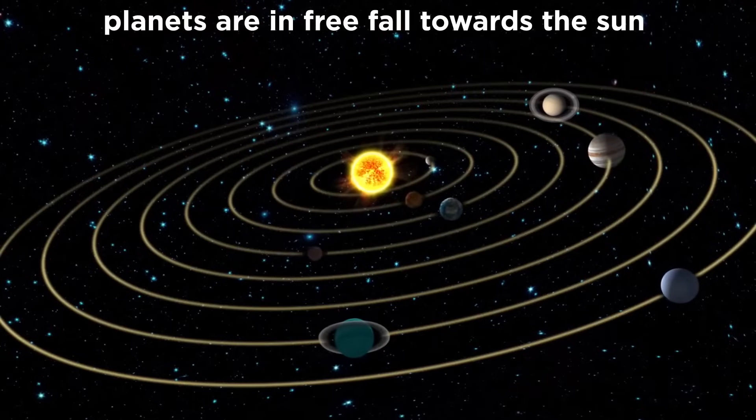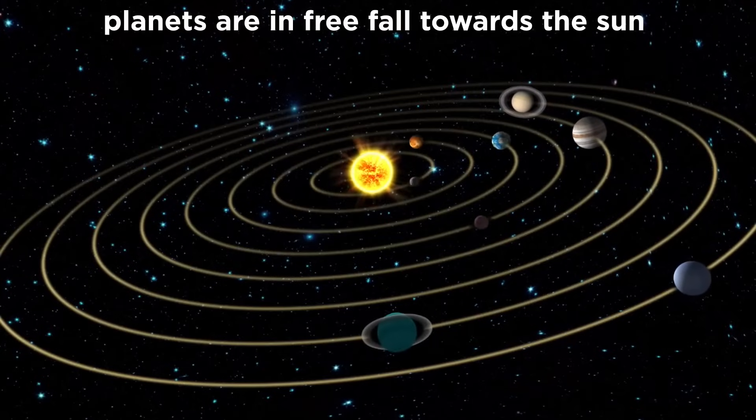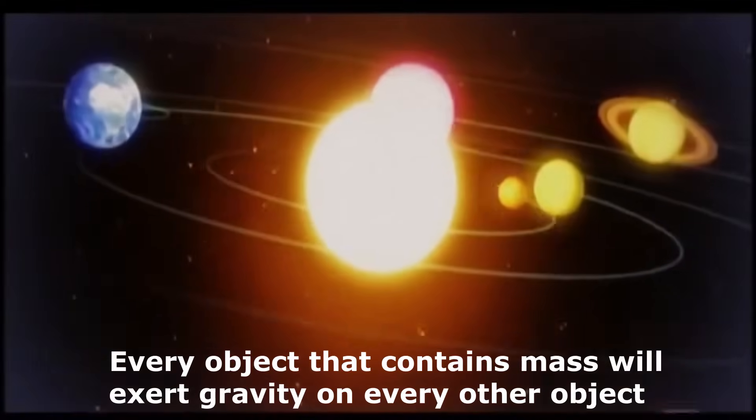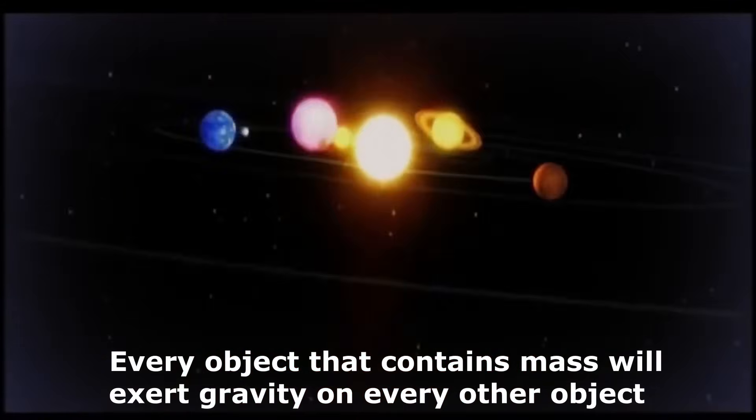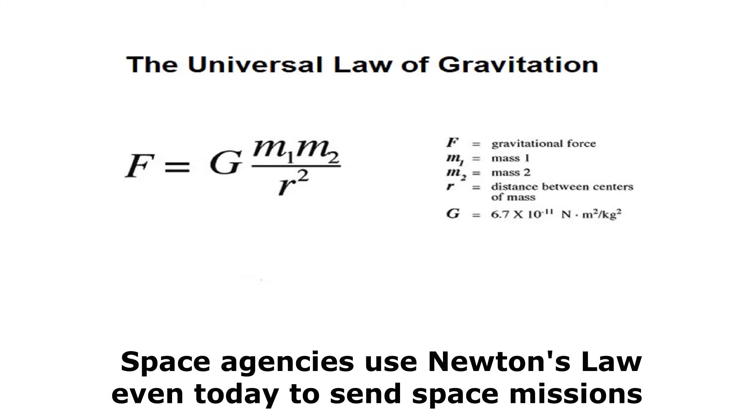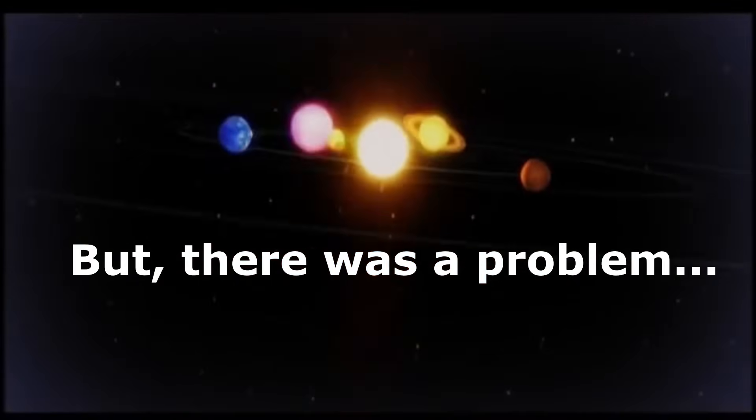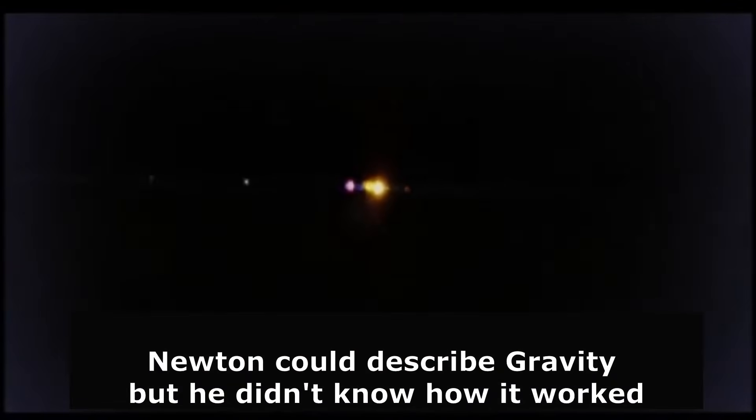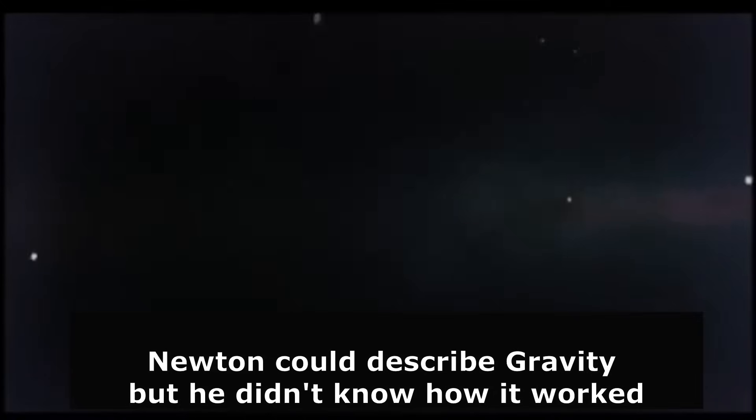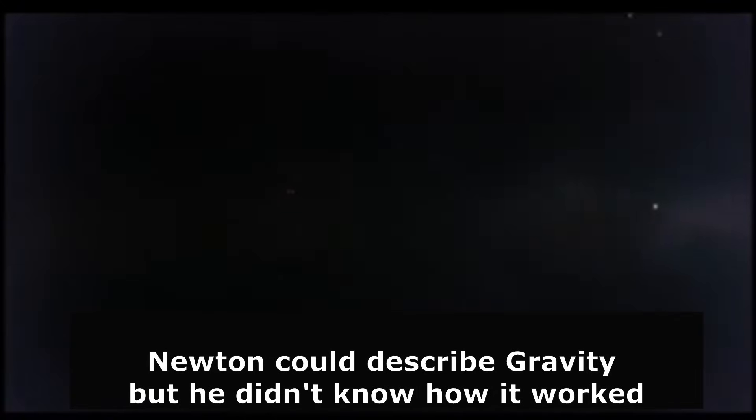Planets are always in free fall towards the sun. As per Newton, every object that contains mass will exert gravity on every other object. Space agencies use Newton's law even today to send space missions. But there was a problem. Newton could describe gravity, but he didn't know how gravity actually worked.